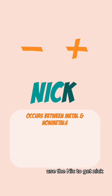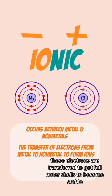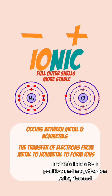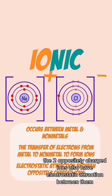Use the NIC to get nick because the non-metal nicks electrons from the metal. These electrons are transferred to get full outer shells to become stable and this leads to a positive and negative ion being formed. The two oppositely charged ions also have electrostatic attraction between them.